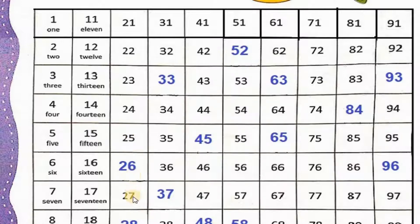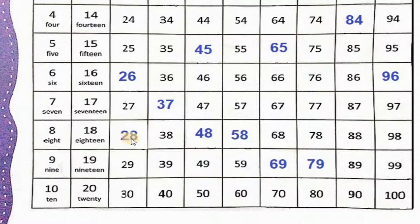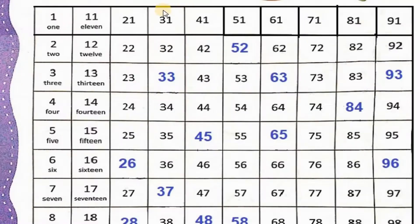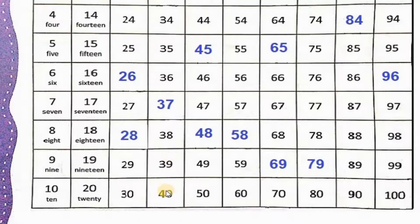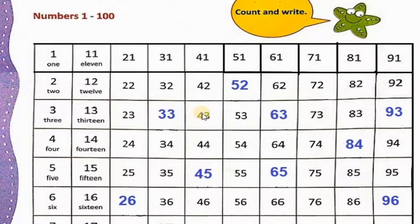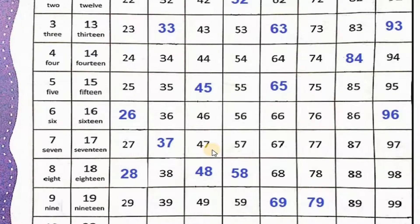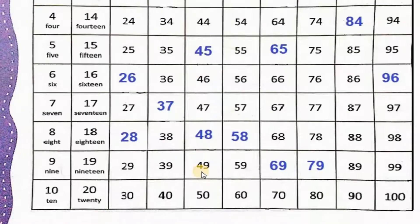25 के बाद 26, 27. 27 के बाद 28, 29, 30, 31, 32, 33. 32 के बाद क्या आता हैं, 33, 34, 35, 36, 37. 36 के बाद 37, 38, 39, 40, 41, 42, 43, 44. 44 के बाद 45, 46, 47. 47 के बाद 48, 49, 50.